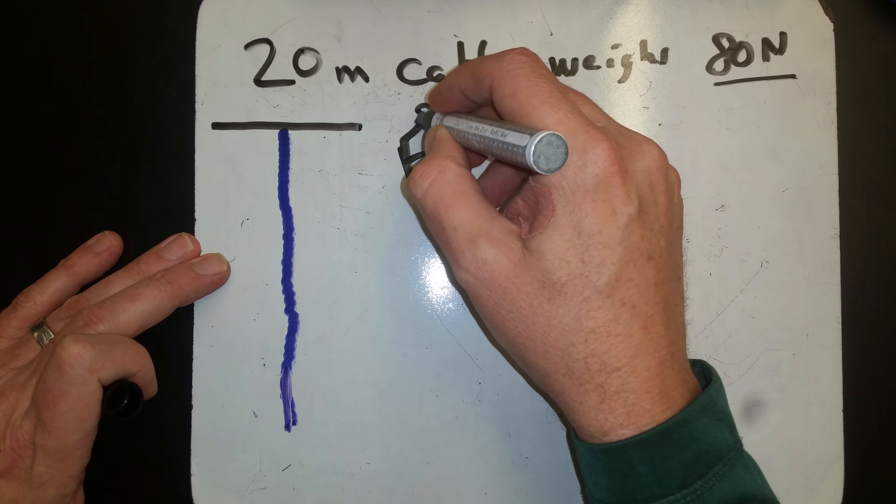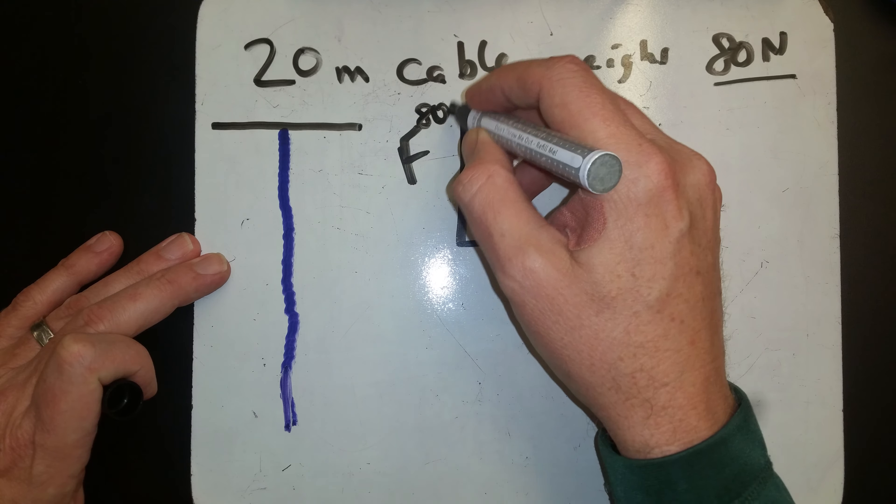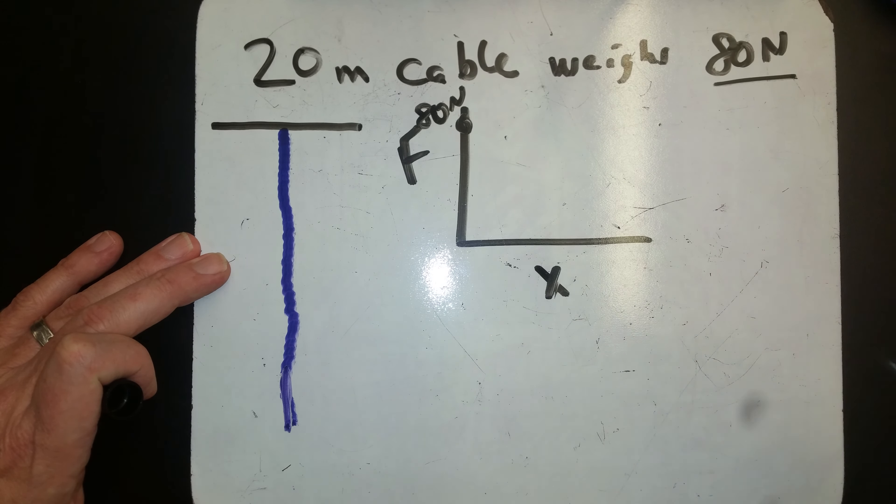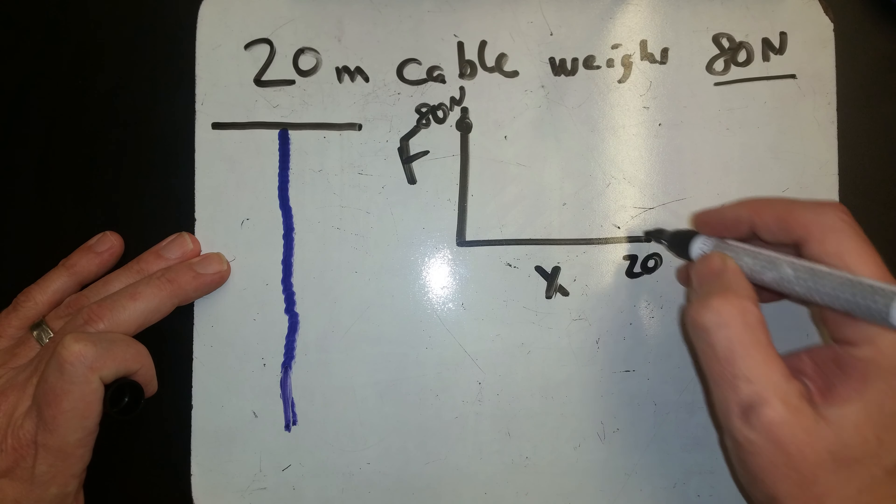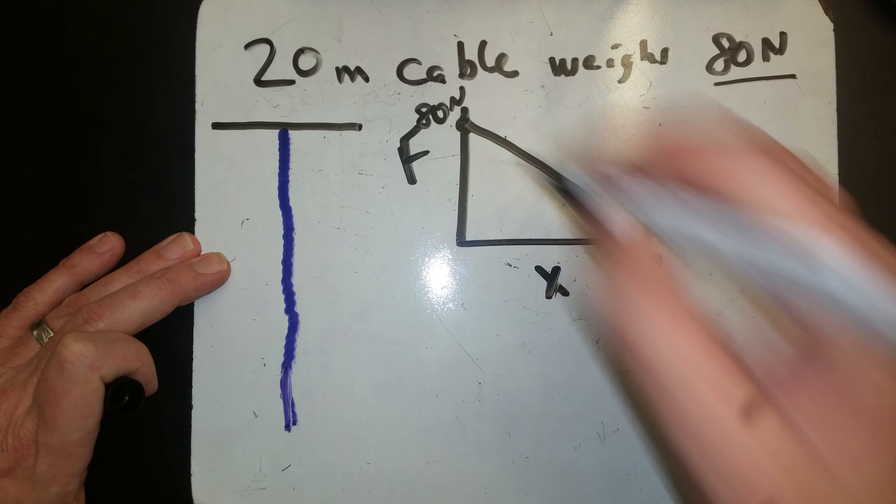When we have pulled up none, we will have 80 newtons of force when we first start pulling. That's how much force we have to pull to lift it. When we get out to 20, after we've pulled up 20 meters, there's nothing left so that goes down to zero.